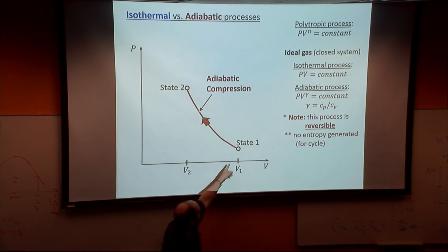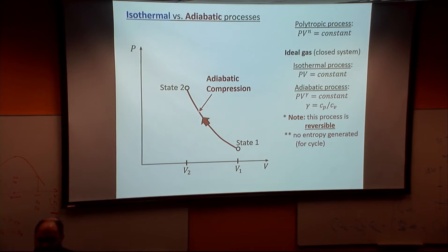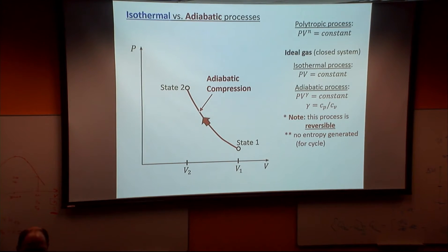If I go up and then come back down the same line, what's the area under that curve for the cycle? Zero.